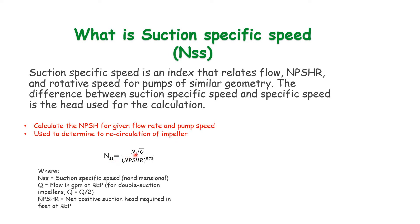Basically, NSS equals N (the speed of pump) squared, multiplied by the square root of flow, divided by NPSHR raised to the power of 2/3. We can see that suction specific speed has a direct relationship with flow and speed of pump, but it has an inverse relationship with NPSHR.